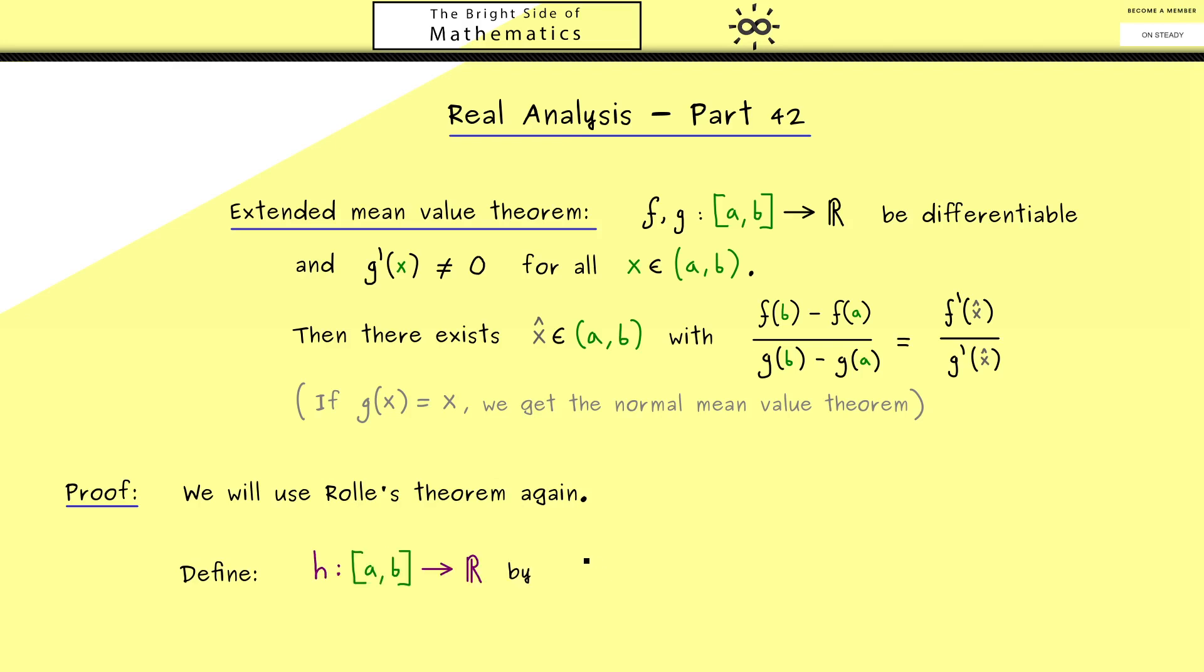Now in the case you remember the last proof you already know this function should be 0 at the boundary points. And we get that when we subtract the mean secant function. However in this case the secant is a little bit more complicated. But still we start with f and subtract the secant function.